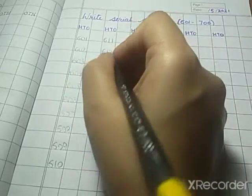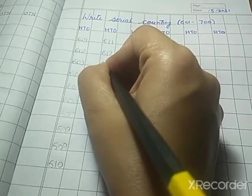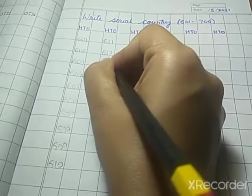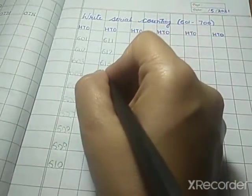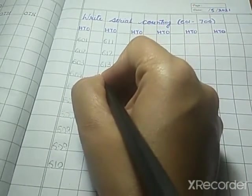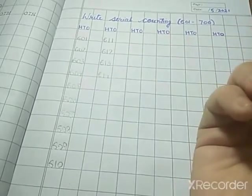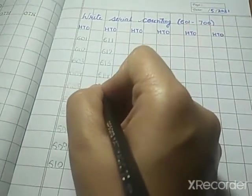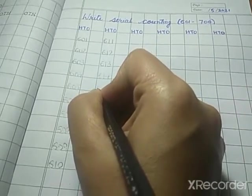Then, what comes after 612? Yes, 613. After 613, what comes? 614. Next, what number will come? 615.